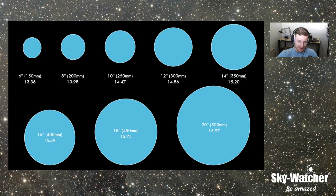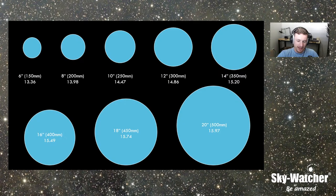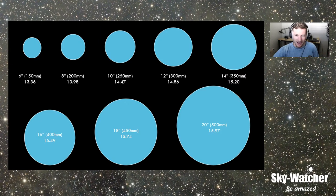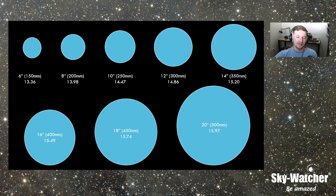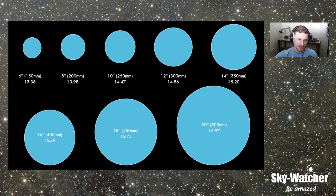My 28-inch's theoretical limiting magnitude is 16.7 — about three-quarters of a magnitude deeper than a 20-inch. There is a noticeable difference between 20 and 28; the 28-inch will edge out a 20 on certain objects. I'd say if you can find something that's at least three-quarters of a magnitude improvement, it's starting to make the conversation worth it. One magnitude is the goal, but you could get away with three-quarters.